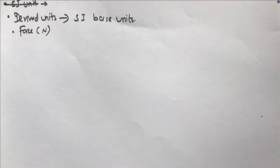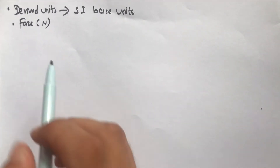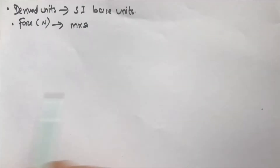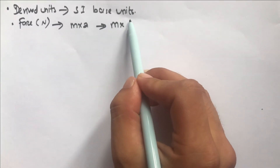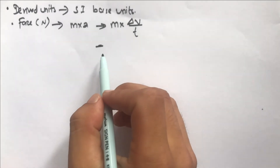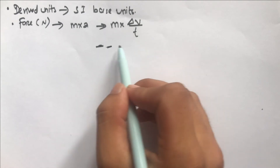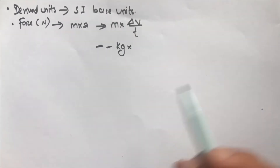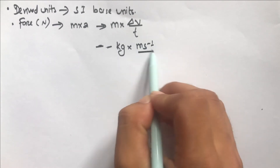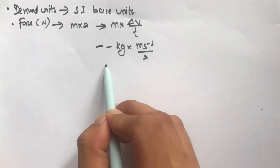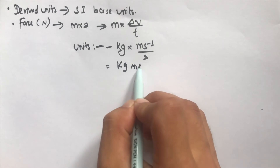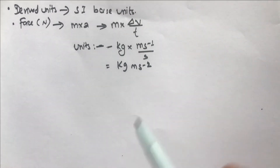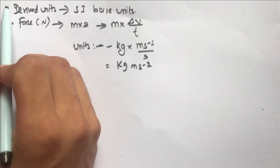To find the SI base units of the newton, we note that force equals mass times acceleration, and acceleration is change in velocity over time taken. Mass has unit kilogram, change in velocity is meters per second, and time has unit seconds. So the SI base units of force become kilogram meters per second squared (kg·m·s⁻²).